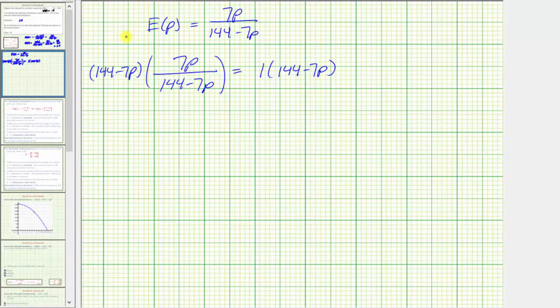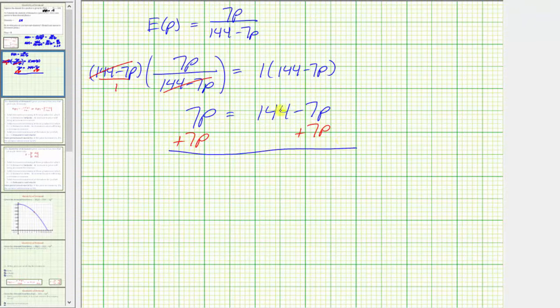So this is the equation. Notice on the left side, we would have a denominator of 1 here and these factors simplify to 1, which gives us the equation 7p equals 144 minus 7p. Add seven p to both sides of the equation. Simplifying, we have 14p equals, this simplifies to zero, we have 14p equals 144.